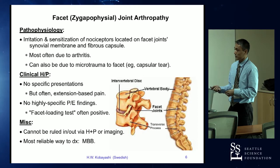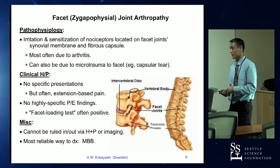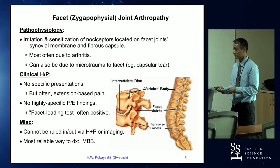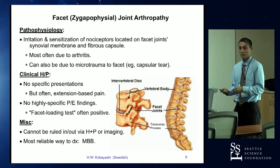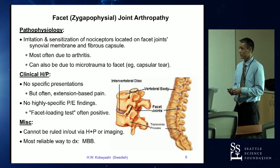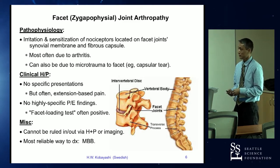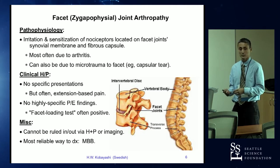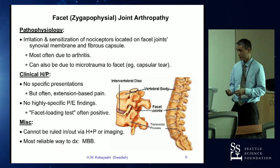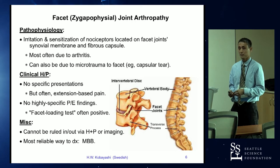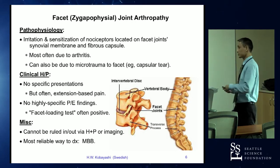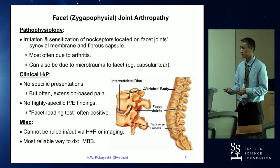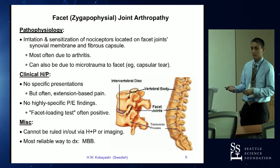There isn't really a great physical exam finding or piece of history that is reliable for ascertaining facet-mediated low back pain. Facet arthropathy is often extension-based pain, but that's not always reliable, and there's no perfect physical exam finding. Some people do what's called the facet loading maneuver — having the patient extend backward and rotate toward the side of pain to see if that reproduces the usual pain — but that's not really a perfect test. Ultimately, the most reliable way to diagnose facet arthropathy is by doing the medial branch blocks.